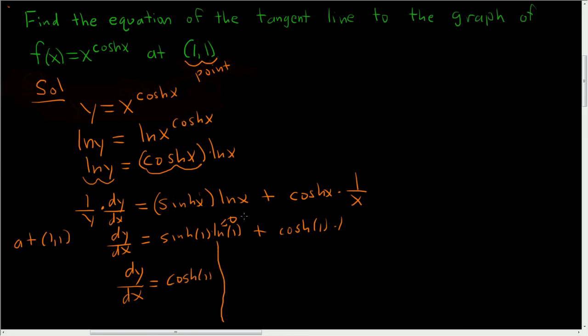To finish, we're going to use the point-slope form of a line: y - y1 = m(x - x1). We plug in y1 = 1, so y - 1 equals our slope, which is the hyperbolic cos at 1, times x - 1. Distributing and adding 1, we end up with y = hyperbolic cos(1) * x - hyperbolic cos(1) + 1.